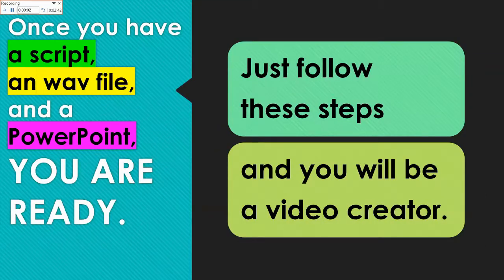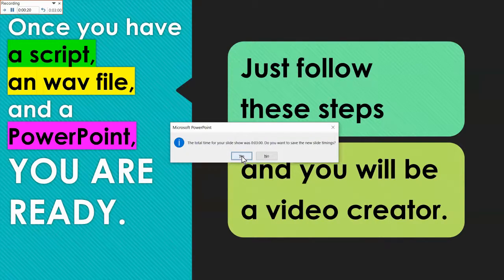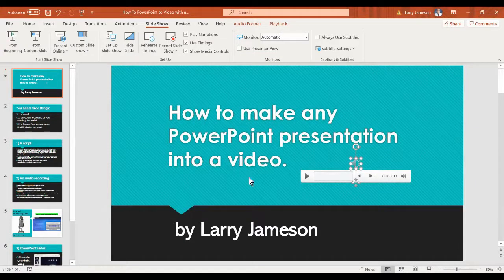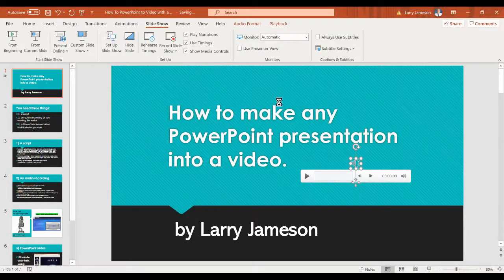Once you have your script and your WAV file and a PowerPoint presentation, then you're ready — just follow these steps and you will become a video creator. We've gotten to the end of the rehearsal, and now what we do is hit Escape. Then it says the total time of your show was three minutes — do you want to save the new slide timings? Yes. Then you go up and you save. Now you've just saved your PowerPoint presentation with embedded audio, and you've done the timings.